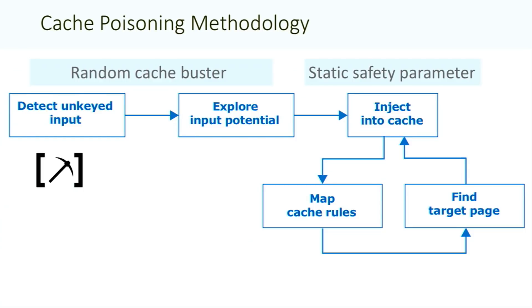So, how do you find cache poisoning? Well, the first step is to identify an unkeyed input — probably a HTTP header or a cookie. I'm releasing the tool ParamMiner as an open source tool that works in the pro and free versions of Burp, so everyone can just run that tool and that will hopefully do a decent job of finding some unkeyed inputs on your site. Once you've found the input, the next step is to work out if you can do anything interesting with it. If genuinely all you can do with this input is change the language, like in the example I just showed you, well...